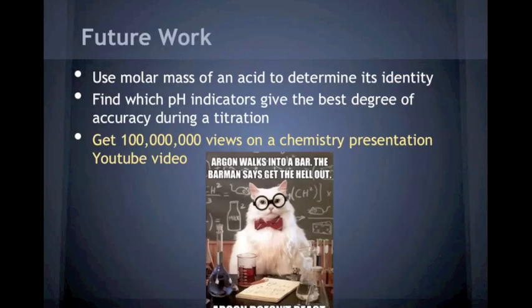As far as future work goes, one thing we can now do is use the molar mass of an acid to determine its identity. We can also find out which pH indicators give the best degree of accuracy during a titration, because we only used one pH indicator throughout this experiment, but maybe a different one would be better suited.